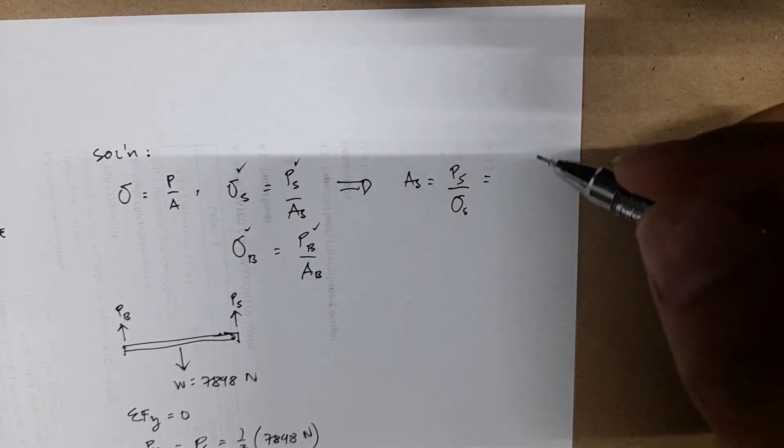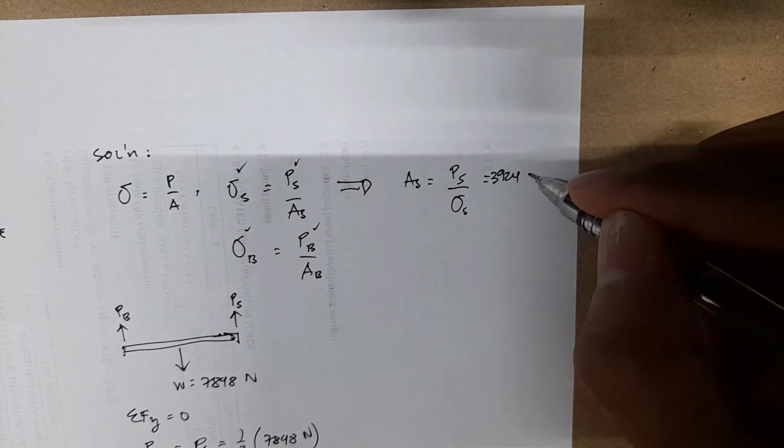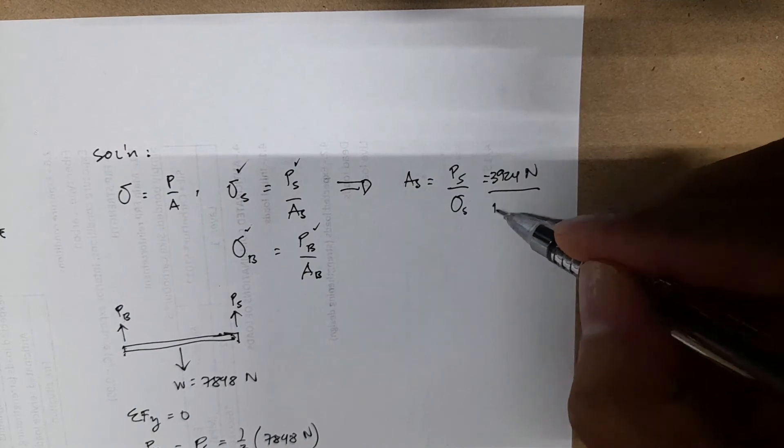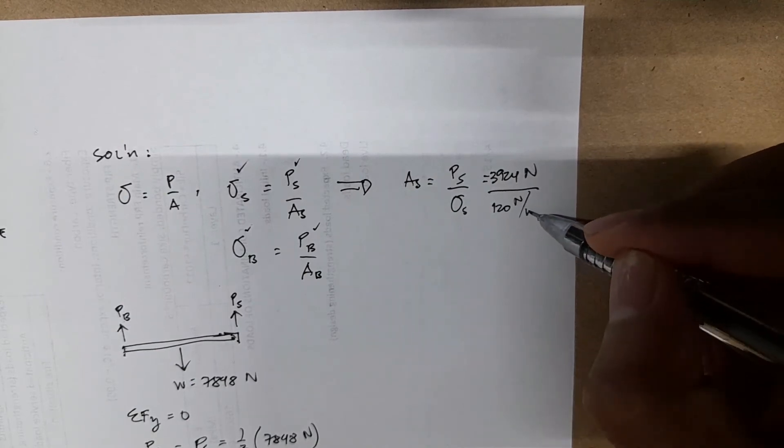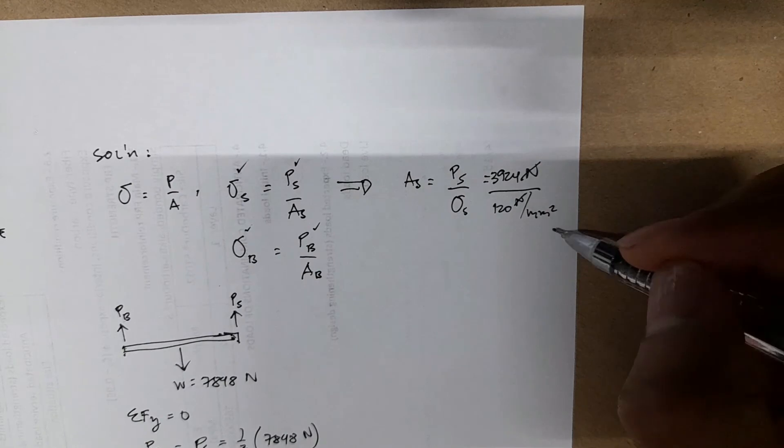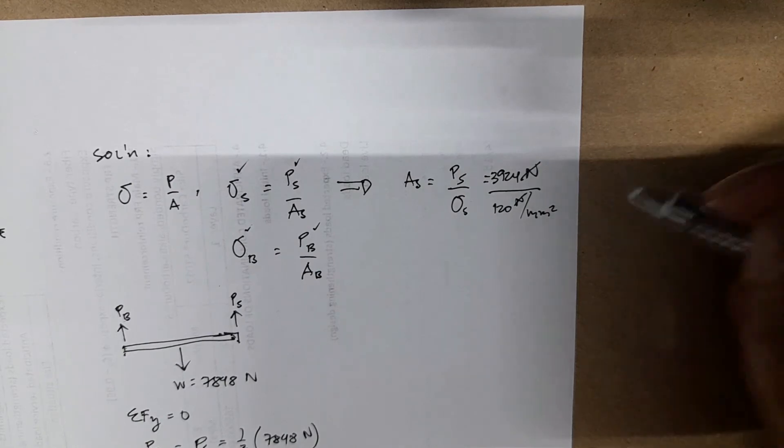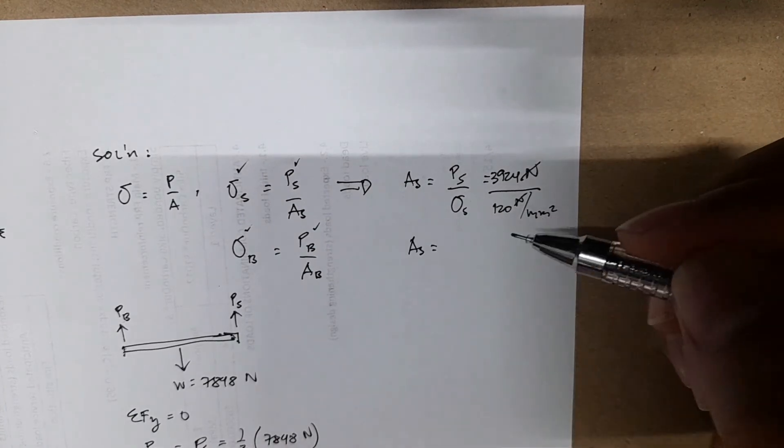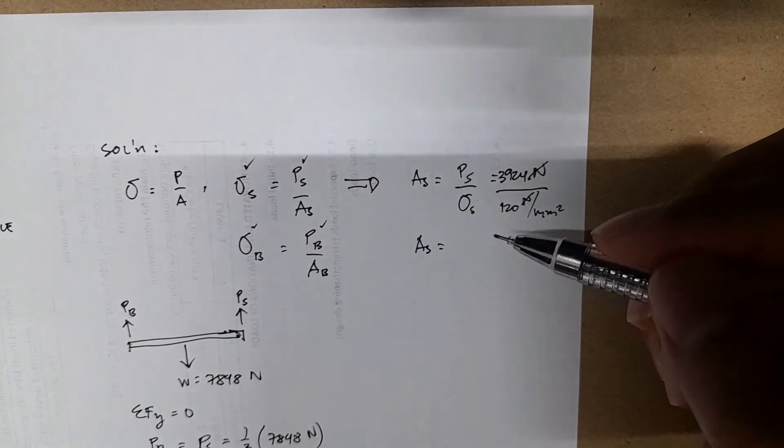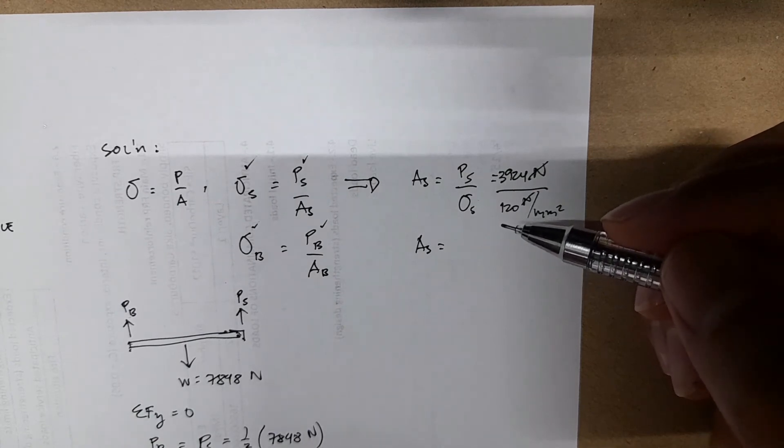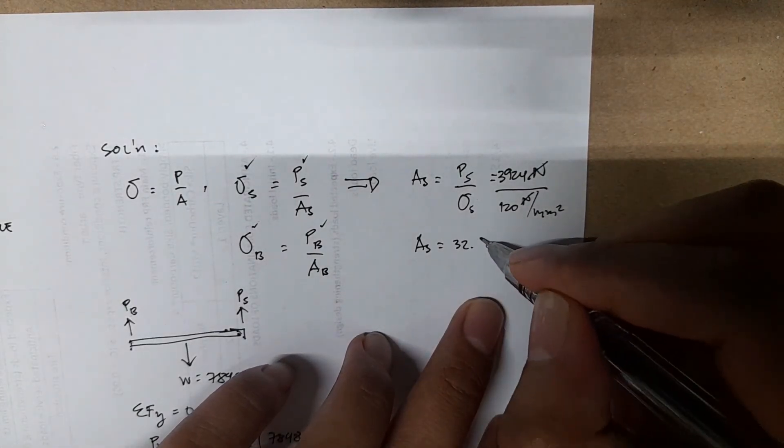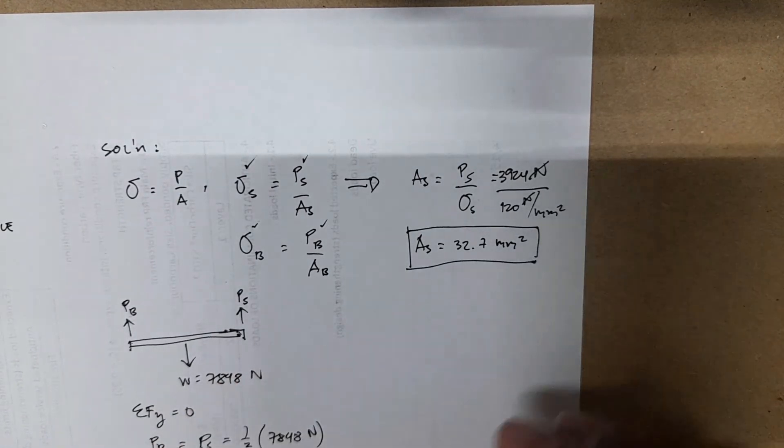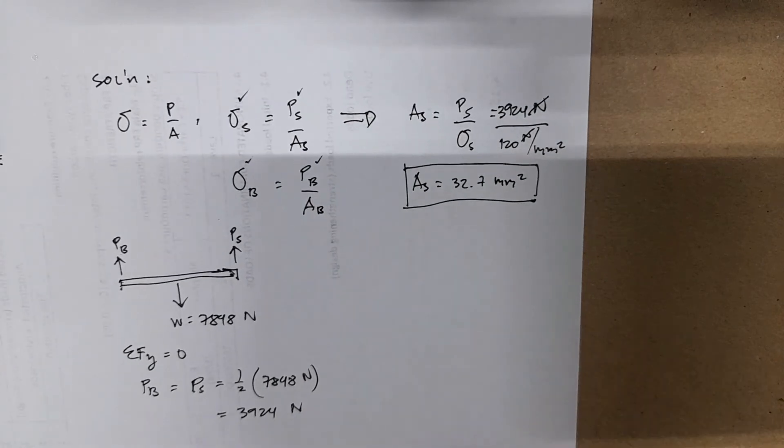It's just equal to your PS, which is now 3924 newton, divided by your sigma S, which is 120 newton per mm square. So this cancels out the N, your mm square goes into the numerator. So AS equals 32.7 millimeters square.